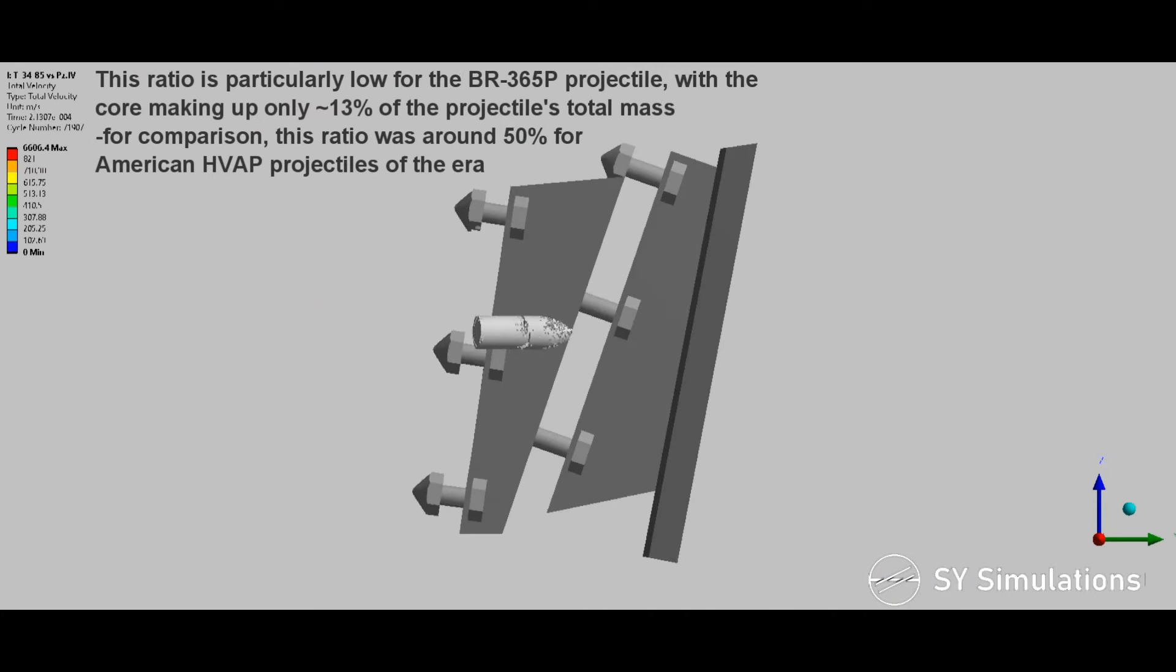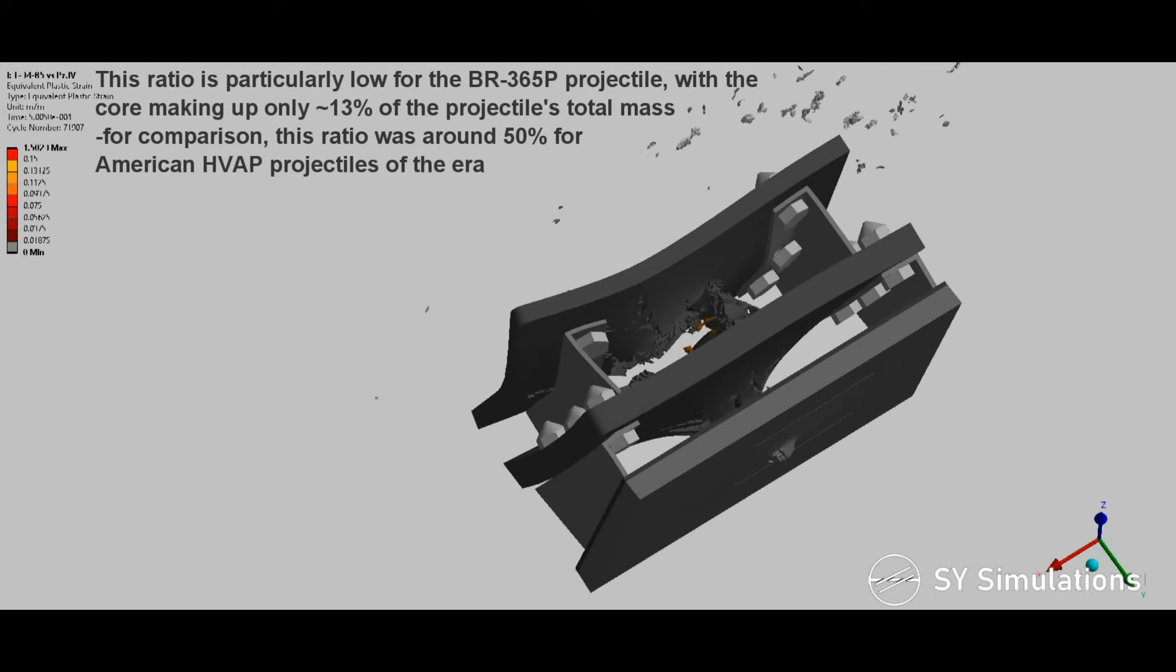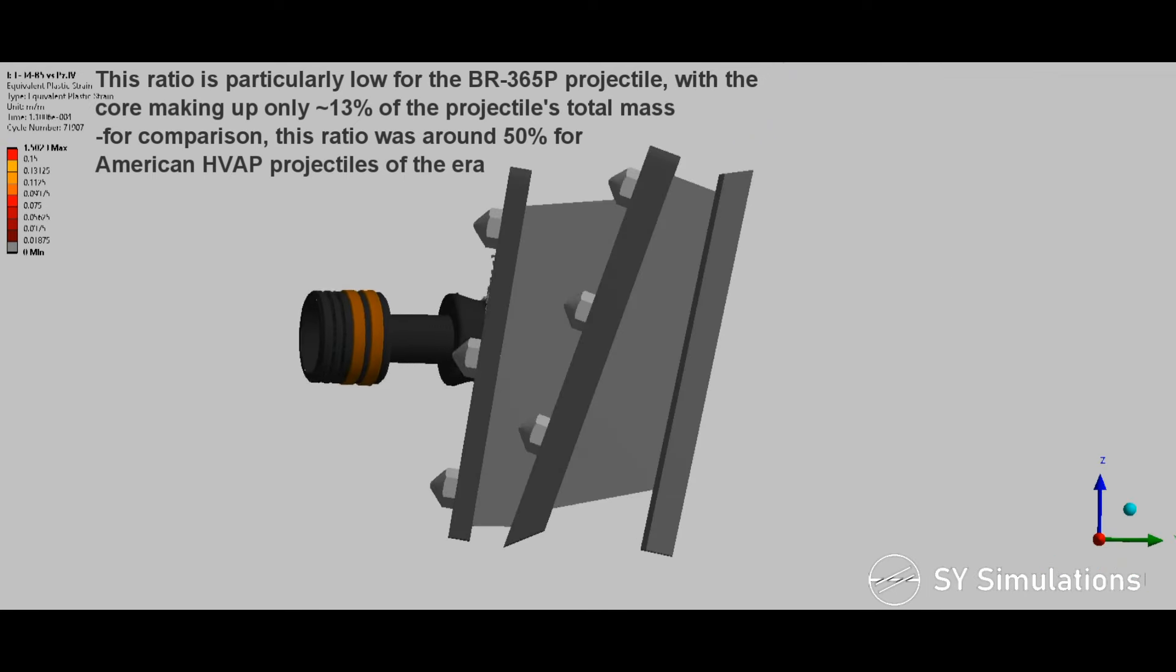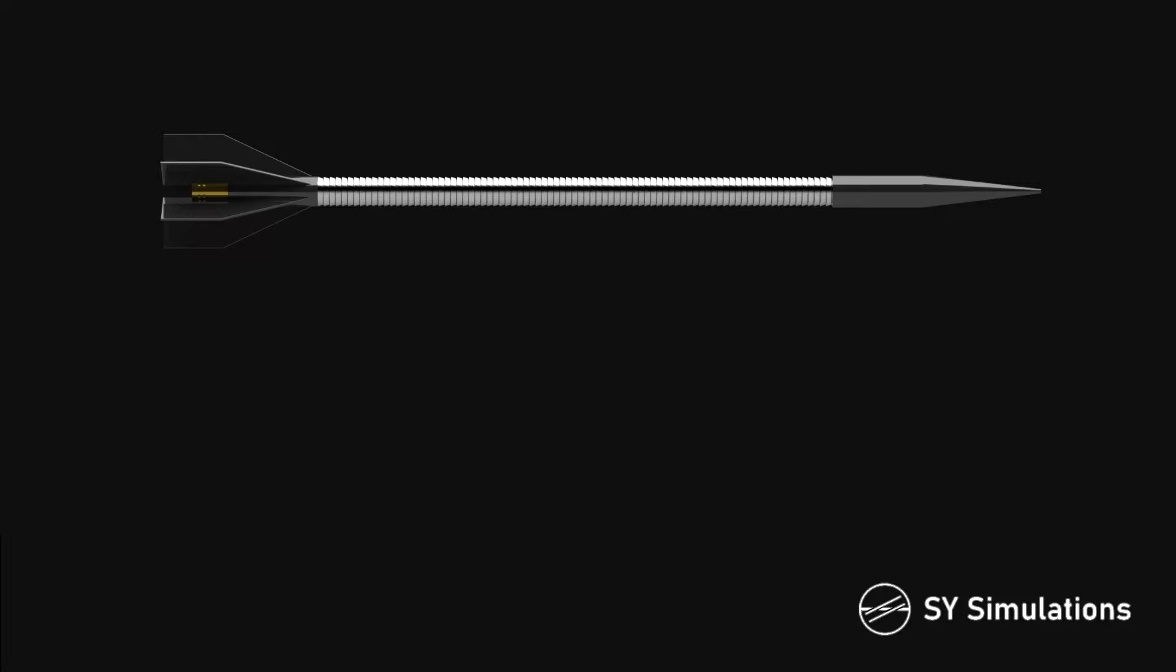This ratio is particularly low for the BR-365P projectile, with the core making up only 13% of the projectile's total mass. For comparison, this ratio was around 50% for American HVAP projectiles of the era.